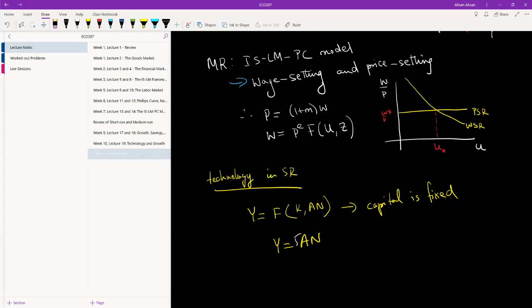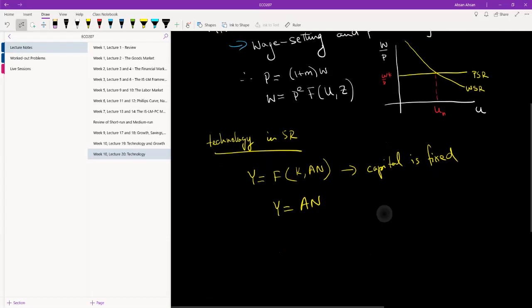What we are going to assume is that capital is fixed. We're just simplifying things. Letting capital vary doesn't add anything to our model, so we can just simplify and write Y is equal to AN.